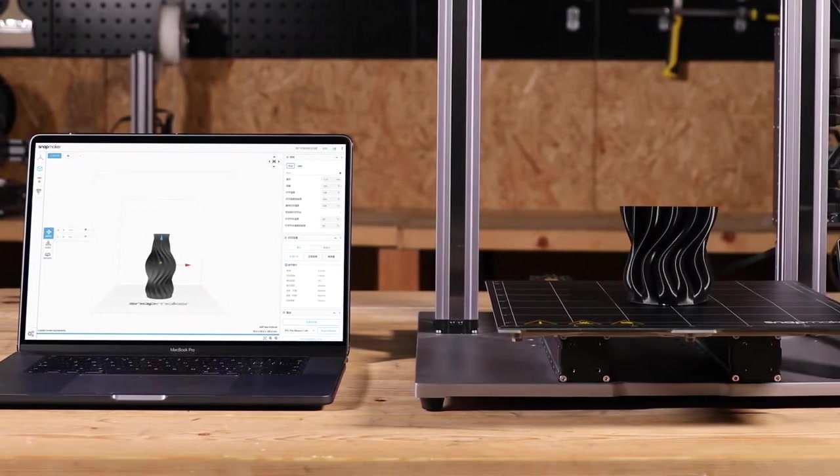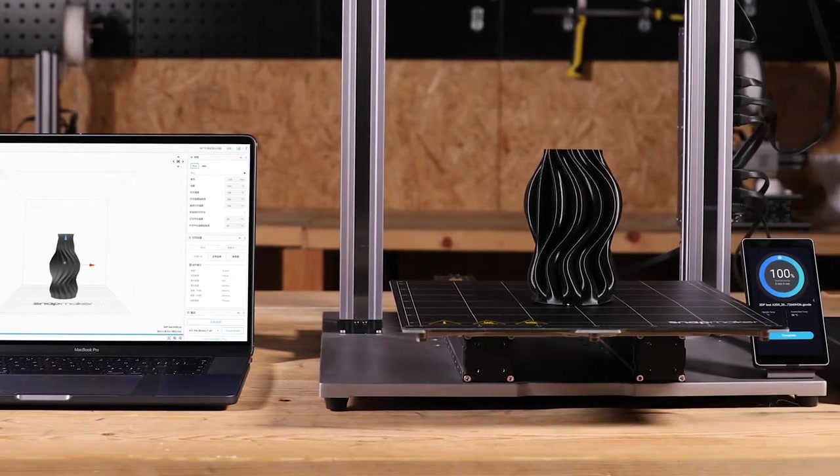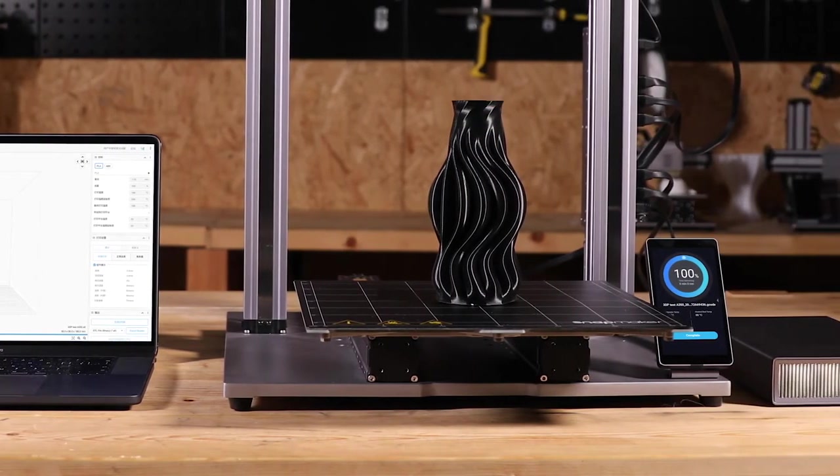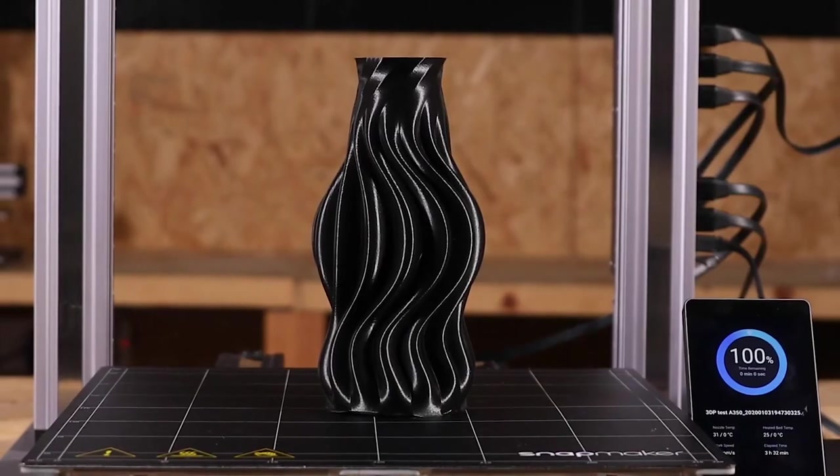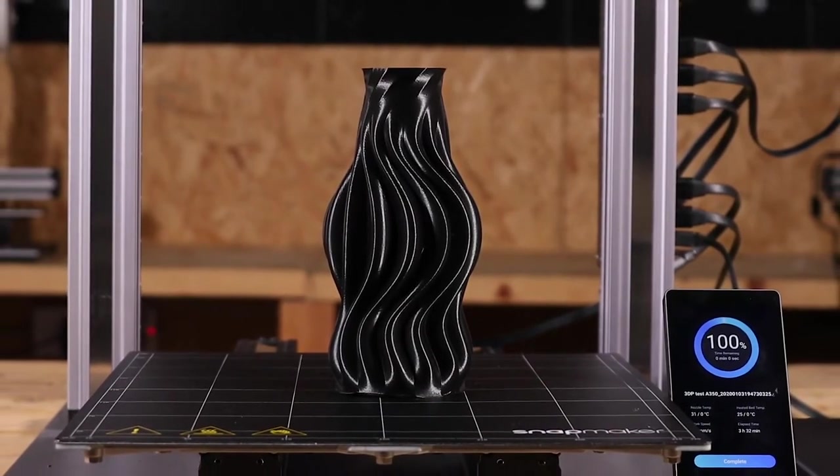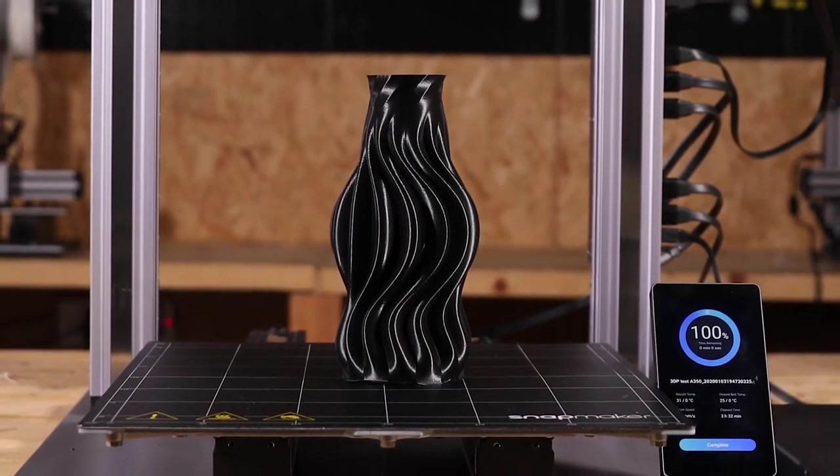3D printing allows you to realize your imagination, going from zero to one. In this video, we're going to demonstrate the use of Snapmaker 2.0 3D printer by printing a vase.